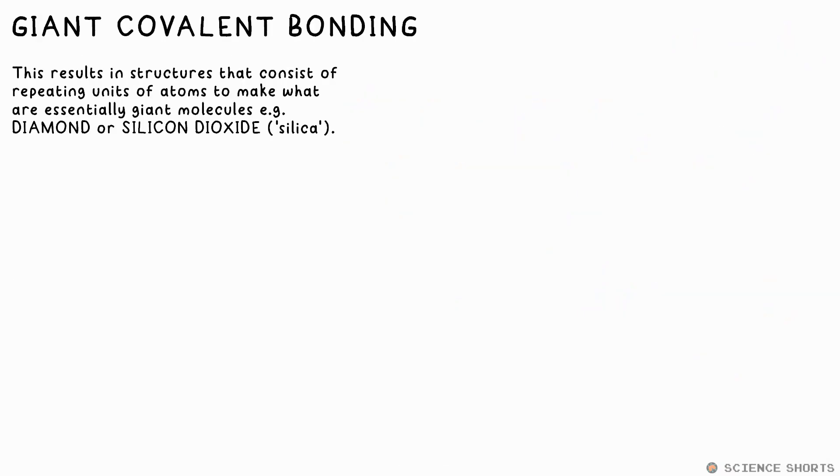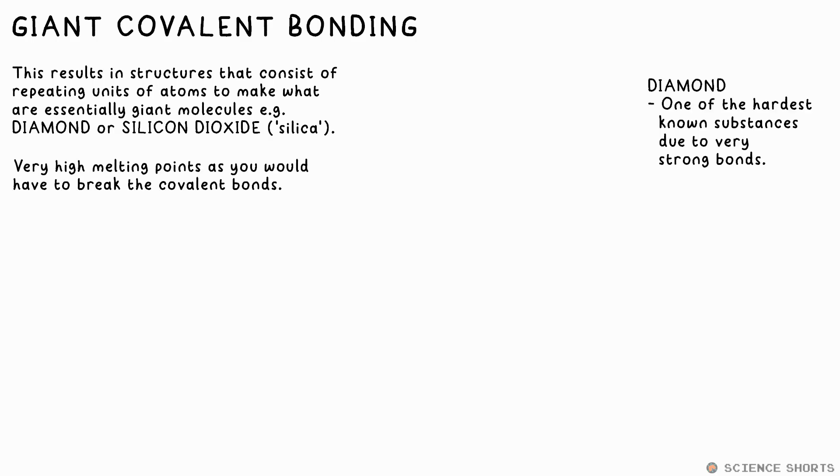Giant covalent bonding is similar to the lattice nature of ionic compounds. Atoms form covalent bonds to other atoms which form bonds to other atoms and so on until what we have in effect is one giant molecule. Diamond is an example of this. It's a crystal of carbon atoms bonded to each other. That's why it's so hard and has such a high melting point. You'd have to break the covalent bonds in order to change it and they're incredibly strong.